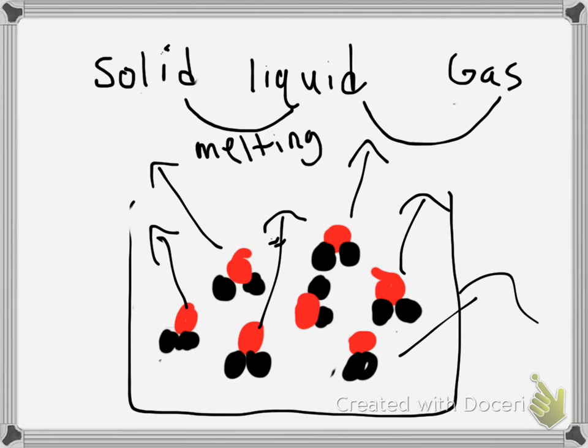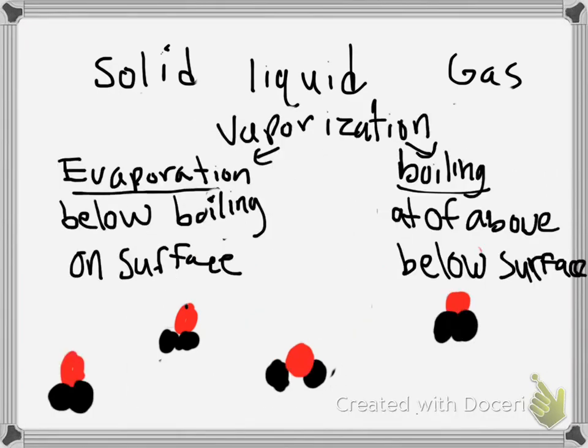That process is called vaporization. Vaporization has two different parts to it. One part is evaporation, the other part is boiling. The key difference is that evaporation is usually below the boiling point and it is on the surface. Boiling is at the boiling point or above the boiling point, and it's usually below the surface.